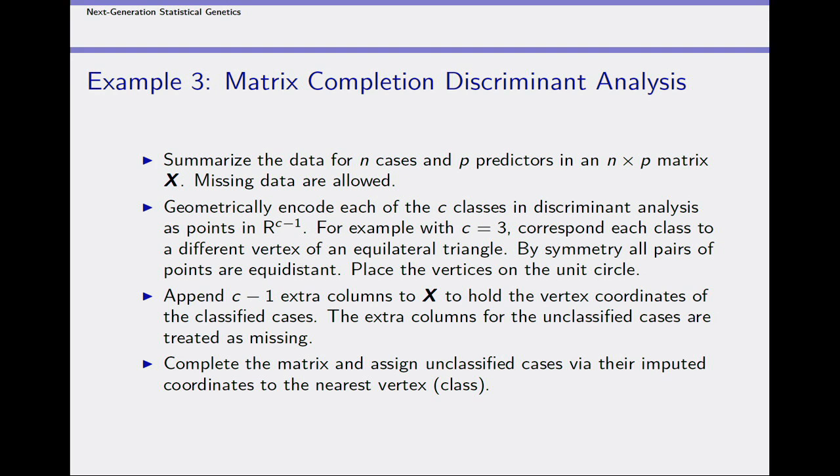Since we're talking about matrix completion, here's another setting where the same notion comes into play — discriminant analysis. In discriminant analysis, you have a number of features collected on individuals, some classified into a finite number of categories and some unclassified. This is one of the most studied problems in statistics and big data. It's actually very hard to do better than existing methods, but matrix completion seems to give advantages in a certain setting — when there's a lot of missing data.